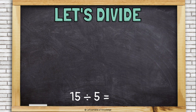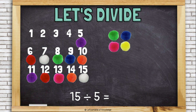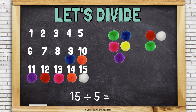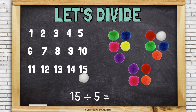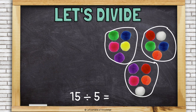Another way to look at this division problem is to once again start with 15 pom-poms, but this time make groups of 5. How many groups of 5 can I make? I can make 3 groups of 5 pom-poms. The answer is 3.